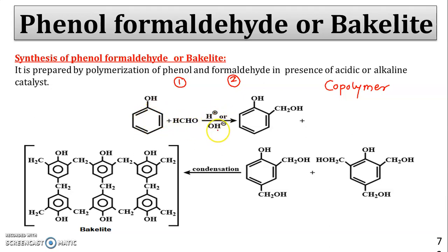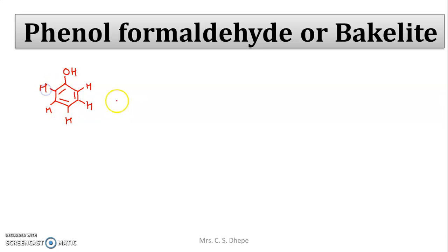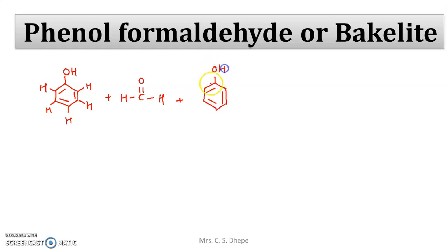In the presence of acid or alkali, phenol and formaldehyde form phenol formaldehyde resin. The benzene ring with an OH group is phenol, and at every corner hydrogen is present. Formaldehyde has the structure C double bond O with two H atoms. When polymerization occurs, something is eliminated.